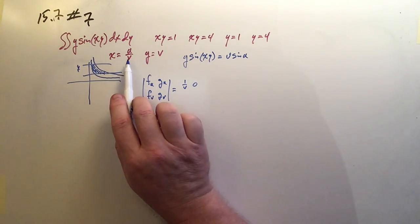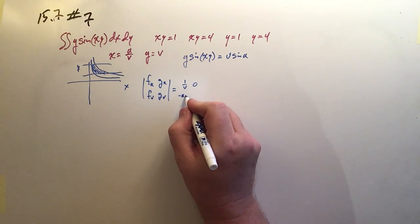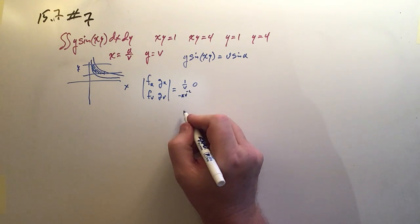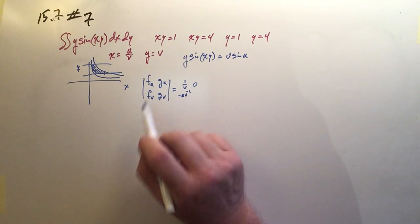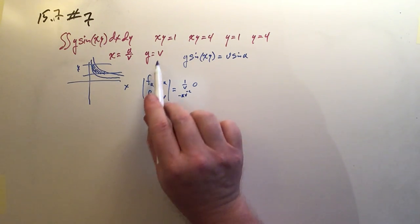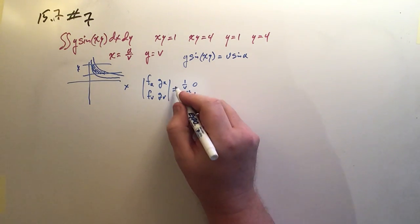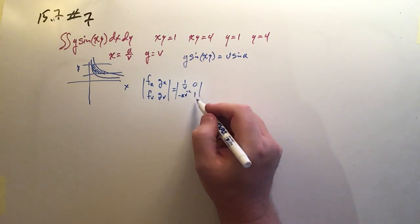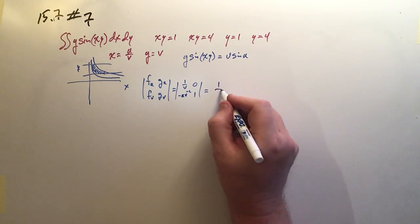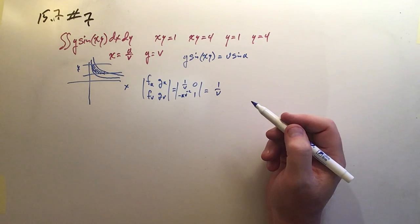f_v is a little tricky. That's u times v to the minus 1. So it's minus u v to the minus 2. But that doesn't matter because it's about to be multiplied by 0. And g_v is just 1. So there it is. And the Jacobian just turns out to be 1 over v. The other cross is 0. So there it is.